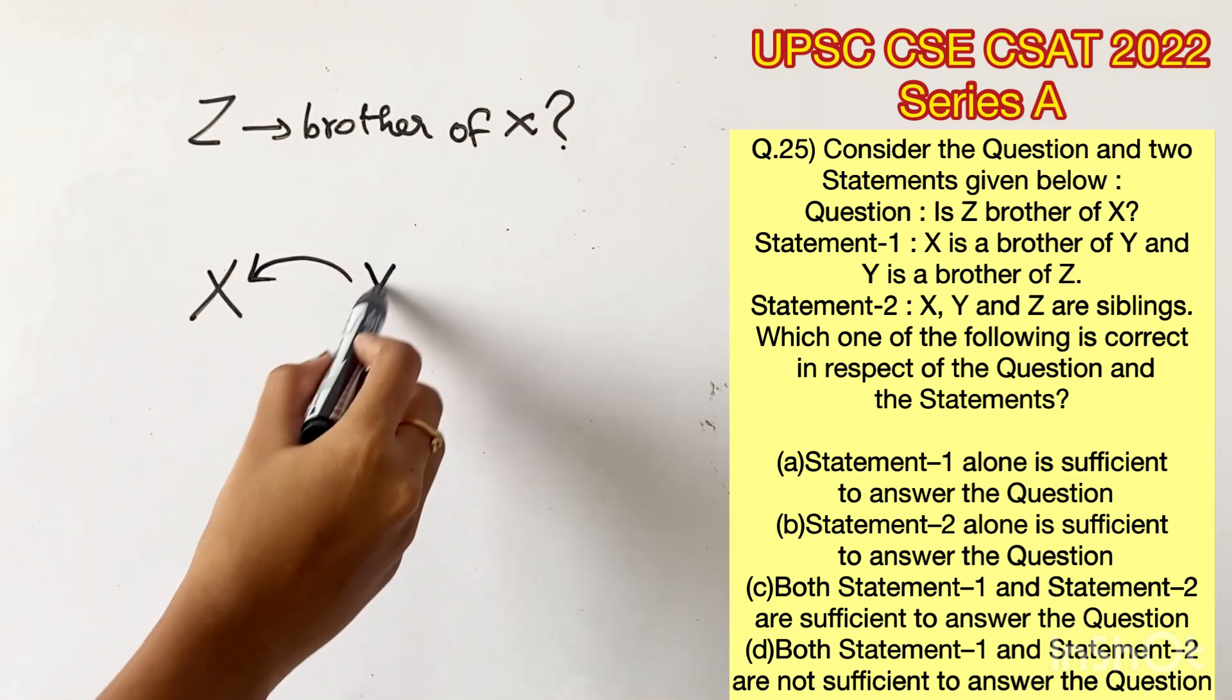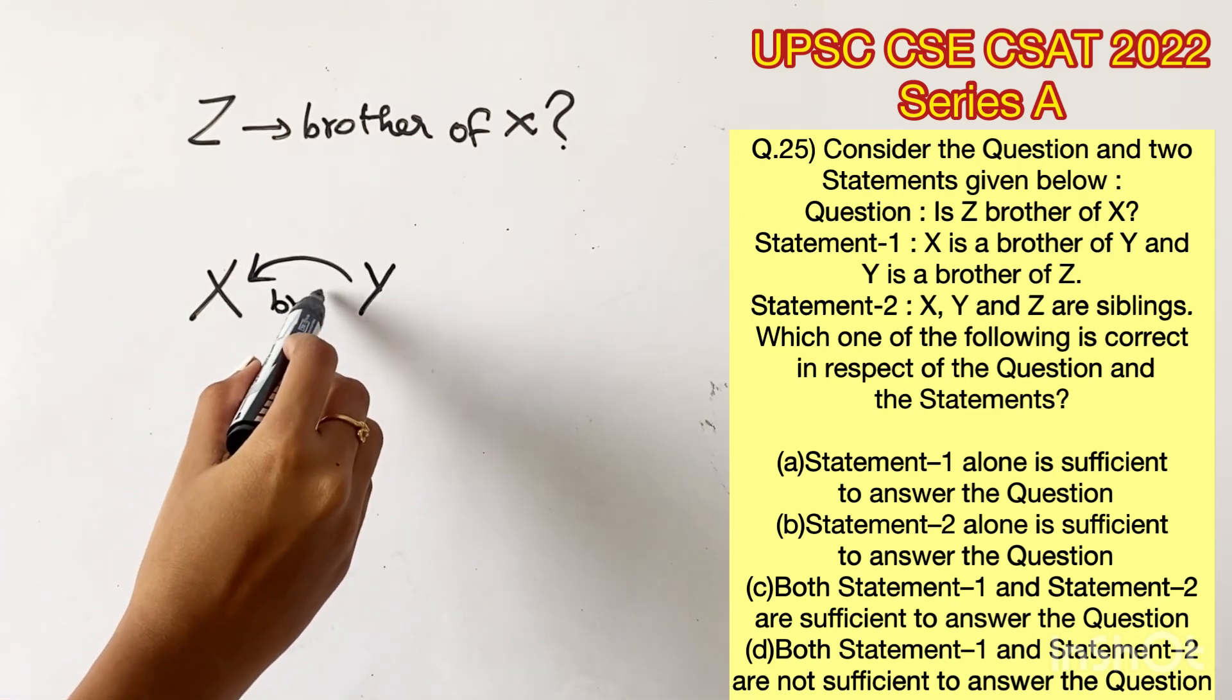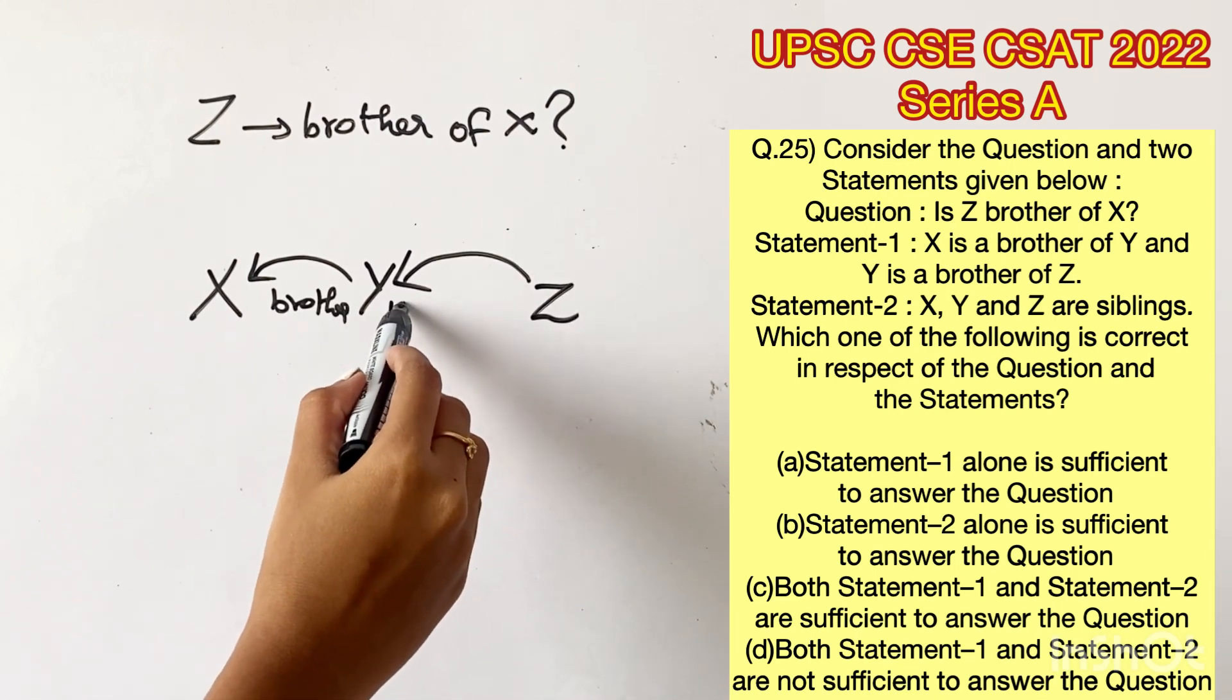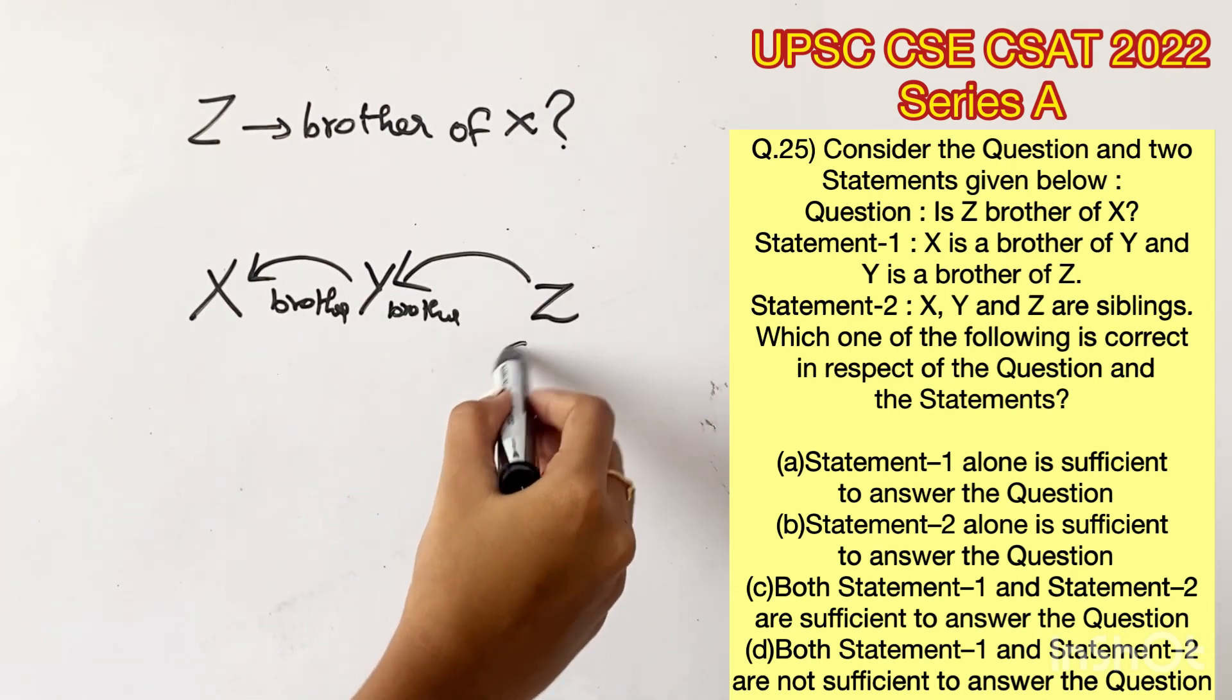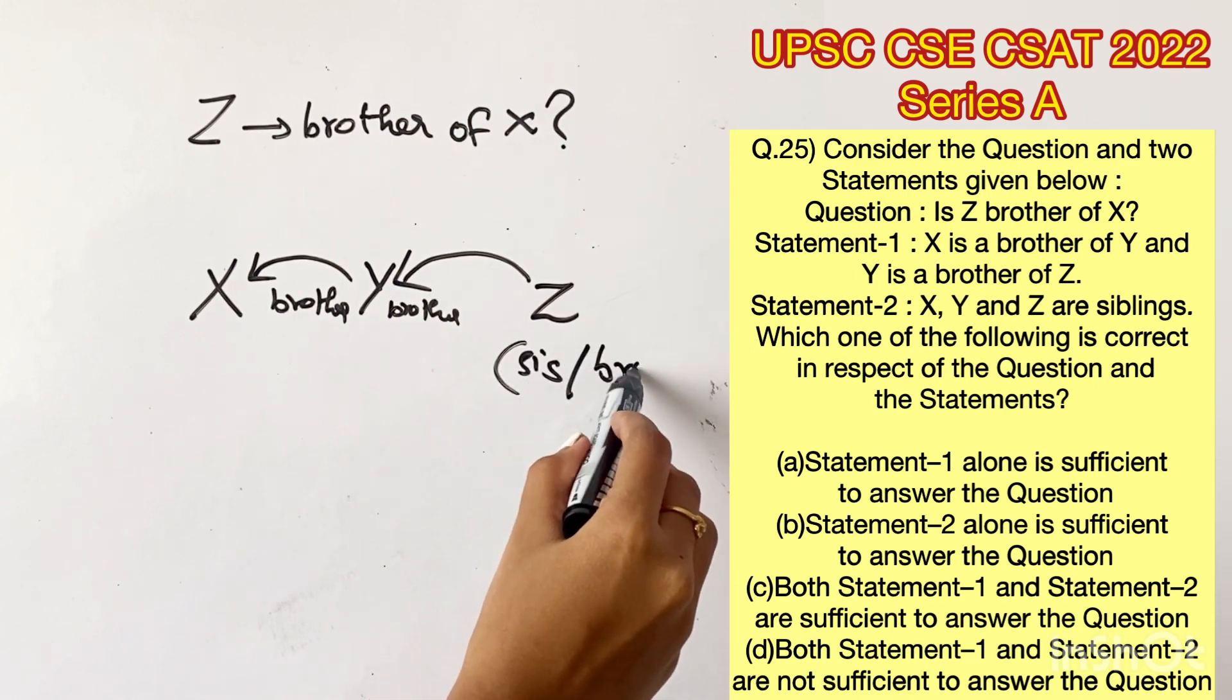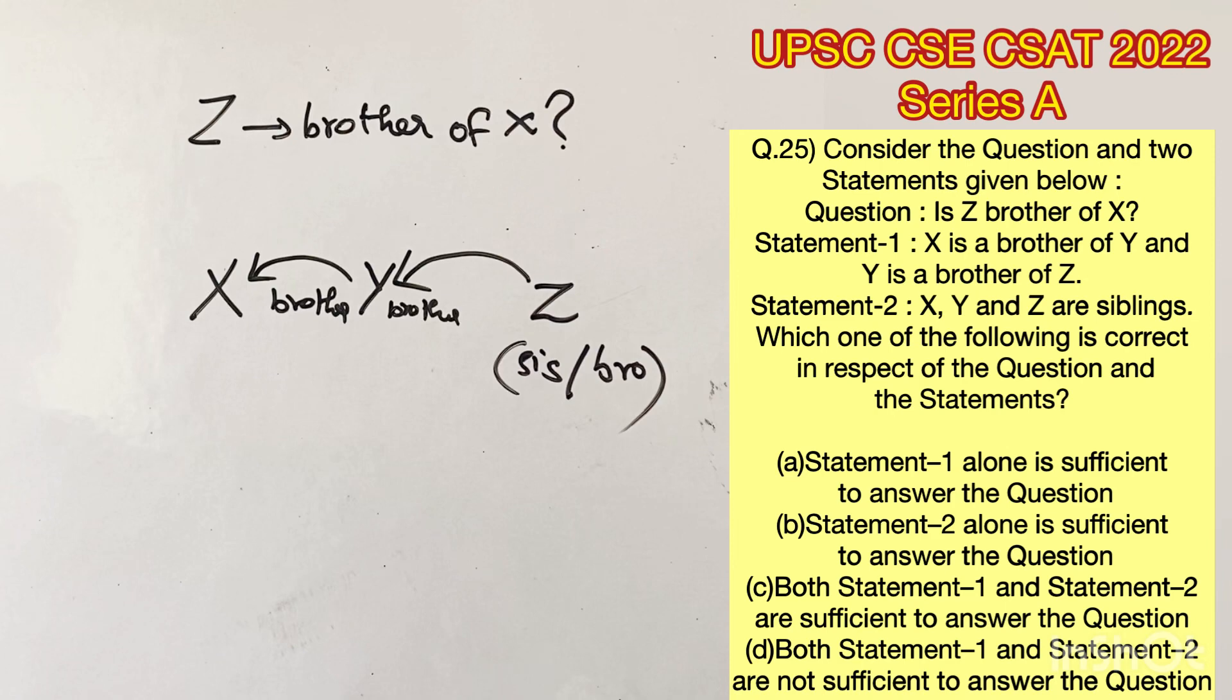First statement says X is the brother of Y and Y is the brother of Z. So we know that now X is a brother, Y is a brother. But Z can either be a sister or a brother to these two. So we don't know if Z is the brother for sure. So statement 1 is not sufficient to answer the question.